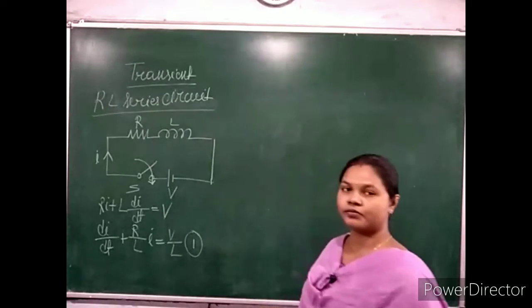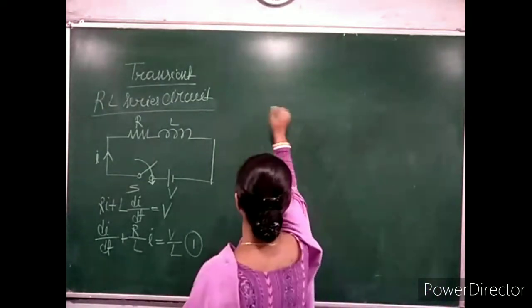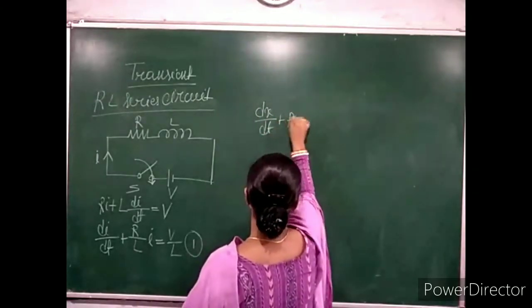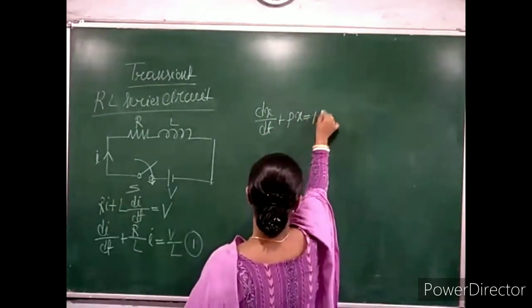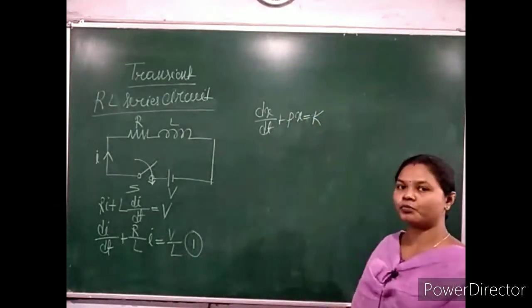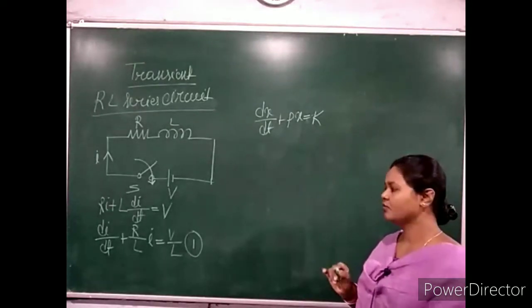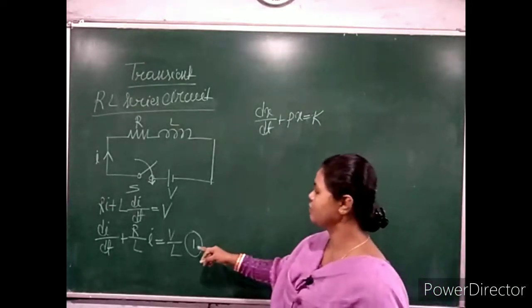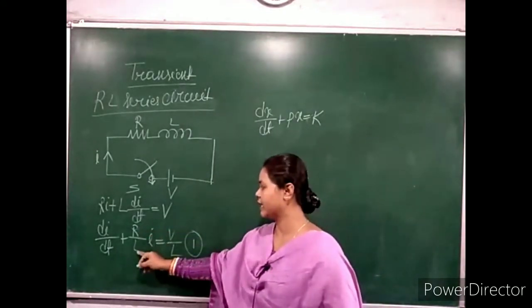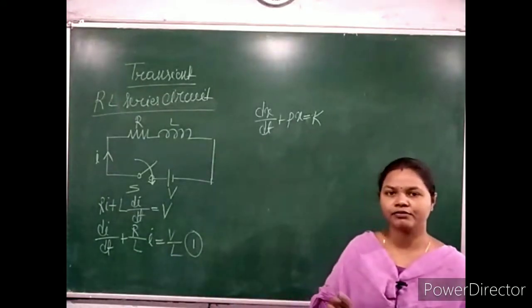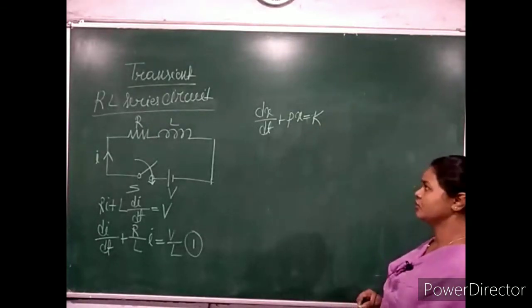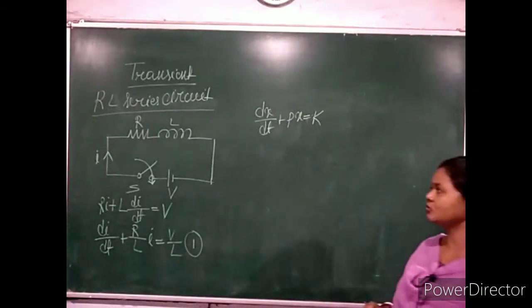The form of the non-homogeneous equation is: dx/dt + P·x = K, where K is a constant and x is the output we need to find. In equation number 1, V/L is the constant, P is R/L, and I is the output to find. This is the form of the non-homogeneous equation and it has two solutions — one is called the complementary solution.